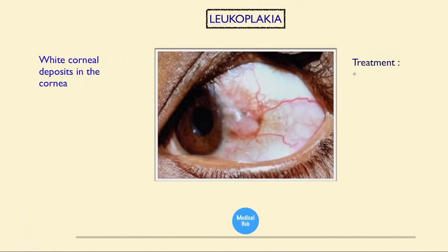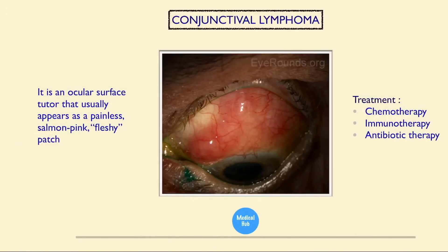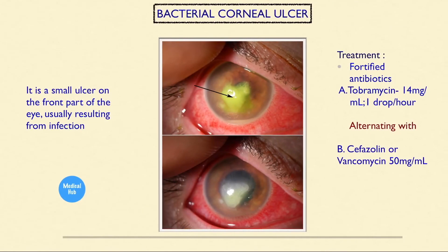This is leukoplakia — white deposits in the cornea. This is conjunctival lymphoma — an ocular surface tumor that usually appears as a painless salmon-pink fleshy patch. Treatment is chemotherapy, immunotherapy, and antibiotic therapy.